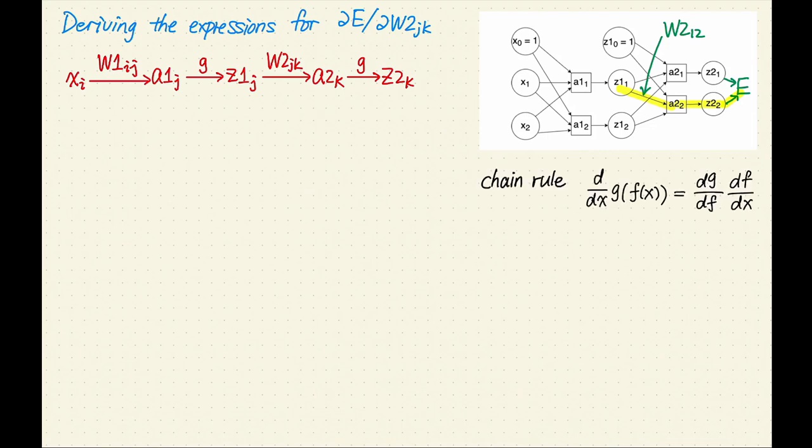Before I start the derivations, let's do a super quick review of the chain rule. Deriving the gradients boils down to repeatedly applying the chain rule. Suppose that we have an expression. In this expression, we have applied several functions in sequence. For our example, I applied f first and then g second.